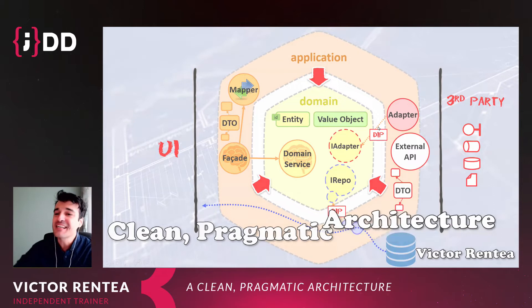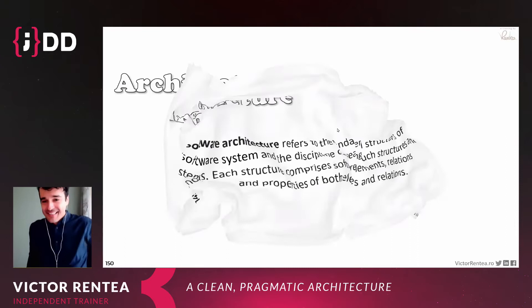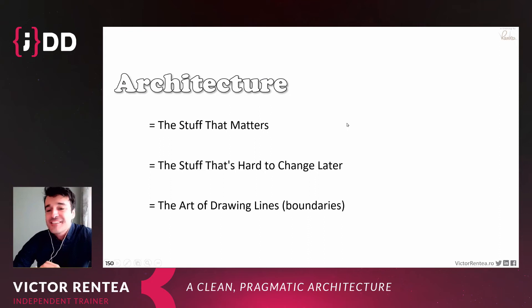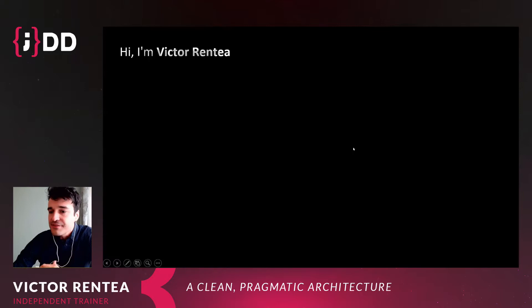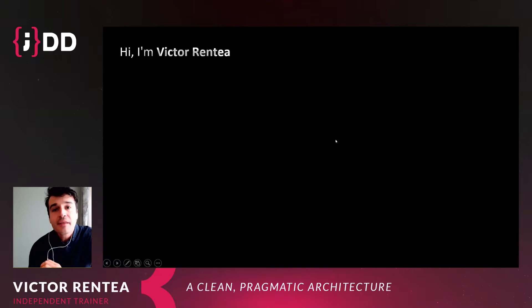Let's get the party started. Clean pragmatic architecture — if you google architecture on Wikipedia, it says 'a fundamental structure of a software system.' But architecture is the stuff that matters, the stuff that's hard to change later. The art of drawing lines. Architecture is how you can solve your main problem with the simplest solution — to simplify the implementation of the most complex part of your system.